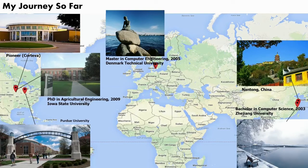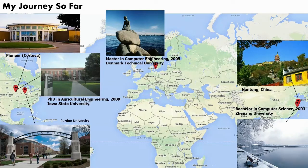I'm showing you the world map here, basically telling you the story of how I came from Asia to Europe and then to the United States, and also how I came from industry to academia. I was originally born in Nantong, China, which is a city across the Yangtze River from Shanghai. When I was 19 years old, I traveled 100 miles south of Shanghai to Hangzhou City and studied computer science at Zhejiang University. Hangzhou is famous for its West Lake — many people say it's the most beautiful lake in China.